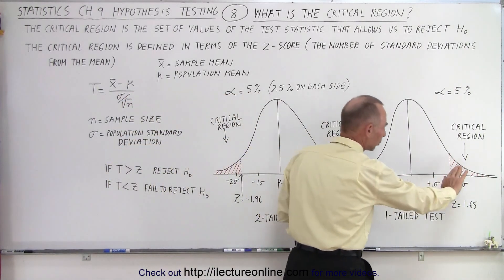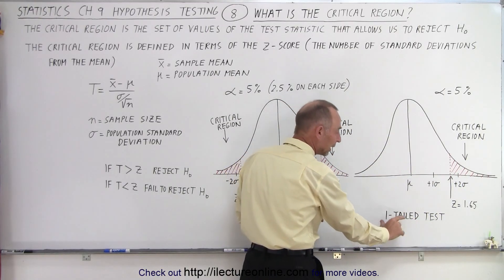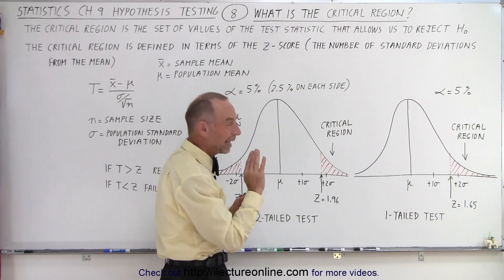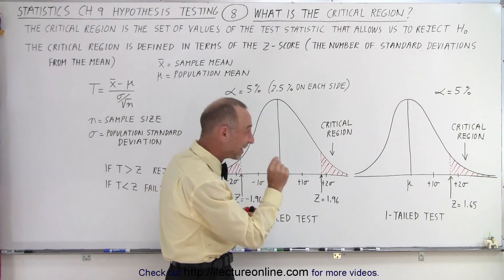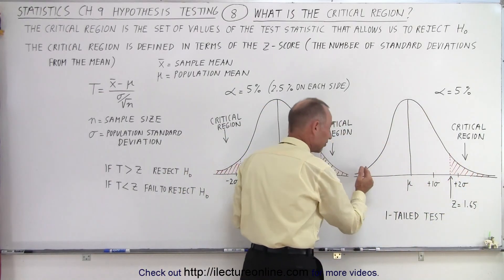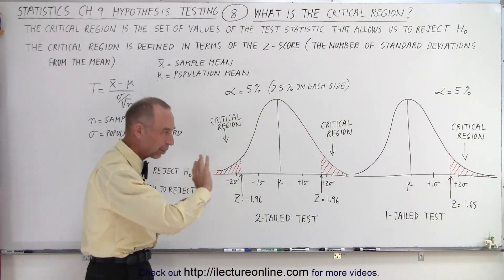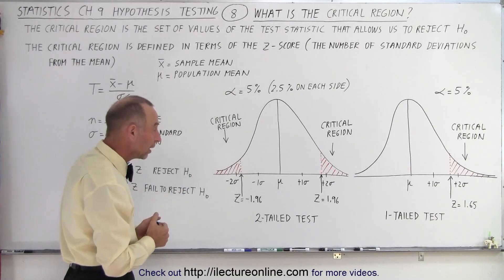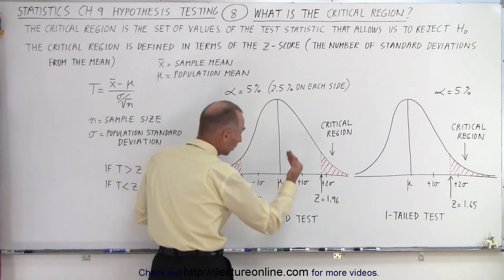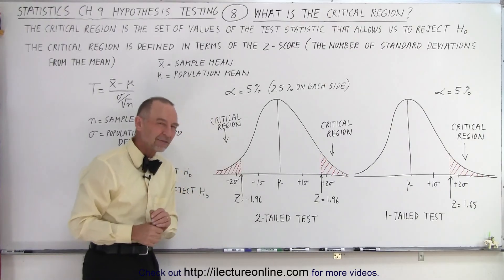You can have one critical region on one side, or one critical region on the other side — we call that a one-tail test. We only have to worry about whether the test statistic falls into the critical region on the right side or the left side. But we could also have a two-tail test, where the test statistic could fall in the critical region on the right side or on the left side.